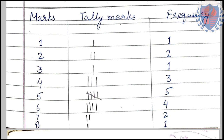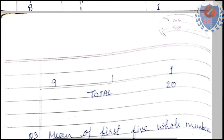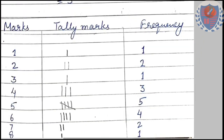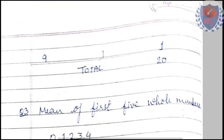You can also solve such questions using tally marks so that no number is skipped. In tally marks: 1 appears once, 2 appears twice, 3 appears once, 4 appears three times, 5 appears five times, 6 appears four times, 7 appears twice, 8 appears once, and 9 appears once. Once you add the frequencies and get 20, your data is confirmed correct.